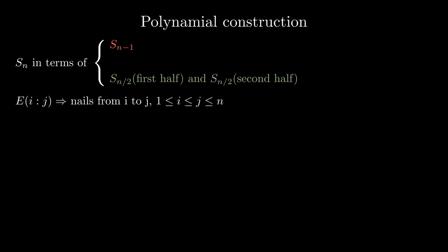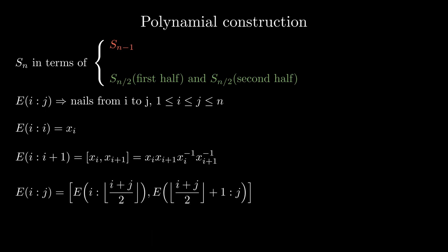In order to do so, we will use the notation shown on the screen, which I will read as e from i through j to consider all the nails from i through j for various i and j. We know that e from i through i is x sub i and e from i through i plus 1 is the commutator of x sub i and x sub i plus 1. And this is how we build e from i through j out of a recursive copy of e applied to the first half of the interval and a recursive copy of e applied to the second half of the interval.